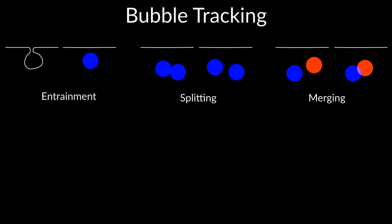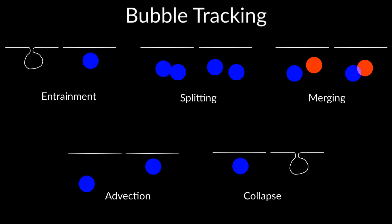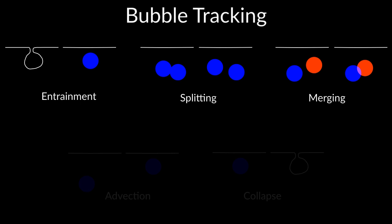To get accurate bubble shapes in motion, we use a two-phase incompressible fluid solver, which we modify to track bubbles between time steps. The actions we track include entrainment, splitting, merging, advection, and collapse. Surface tension effects during entrainment, splitting, and merging are what cause most bubble vibrations.